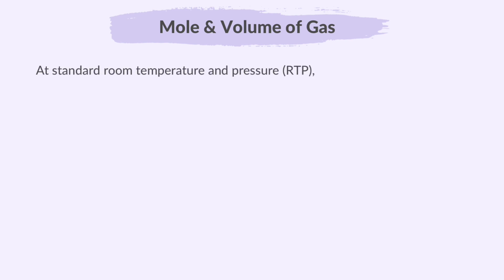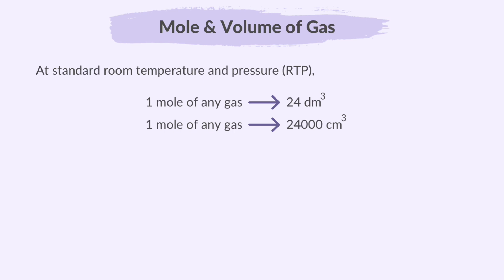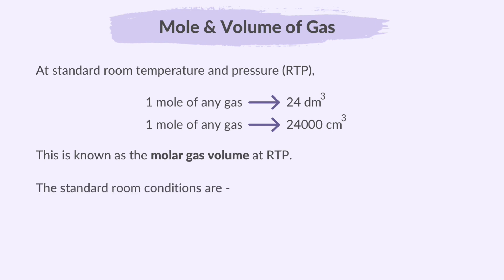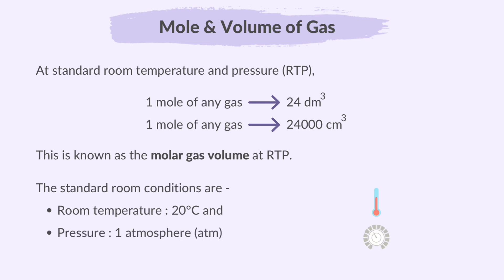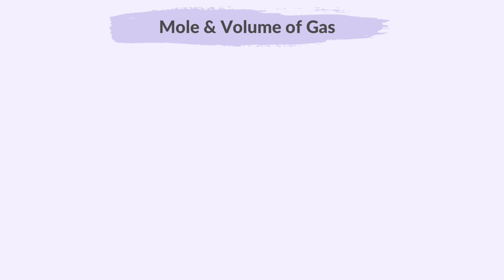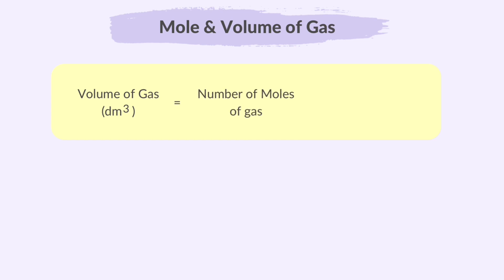At standard room temperature and pressure, or RTP, the space taken up by one mole of any gas measures 24 dm³ or 24,000 cm³. This is known as the molar gas volume at RTP. The standard room conditions are a temperature of 20°C and a pressure of 1 atm. When you want to calculate either the volume of a gas or the number of moles of a gas, you use this formula: volume of gas (in dm³) = number of moles of gas × 24 dm³.